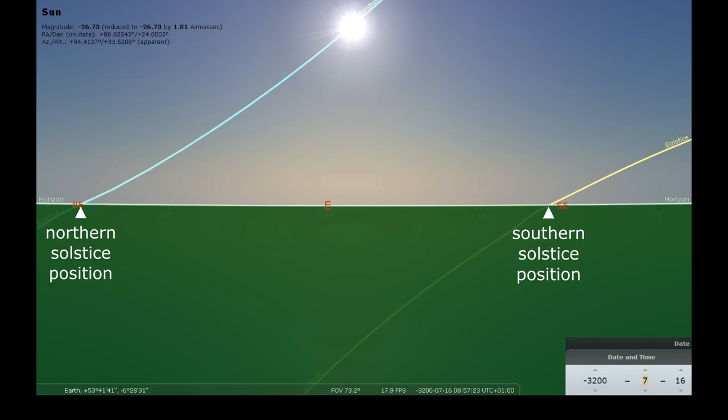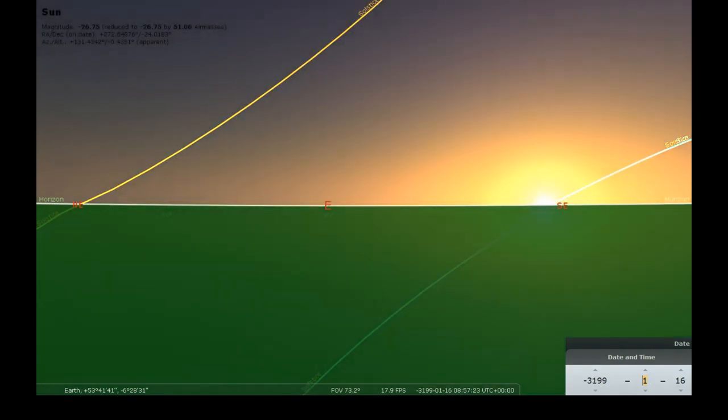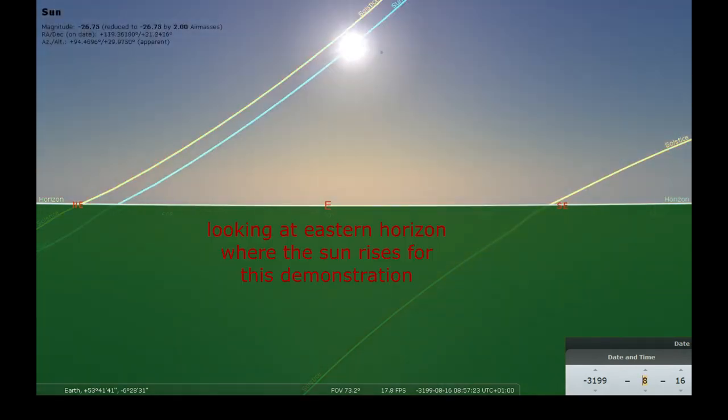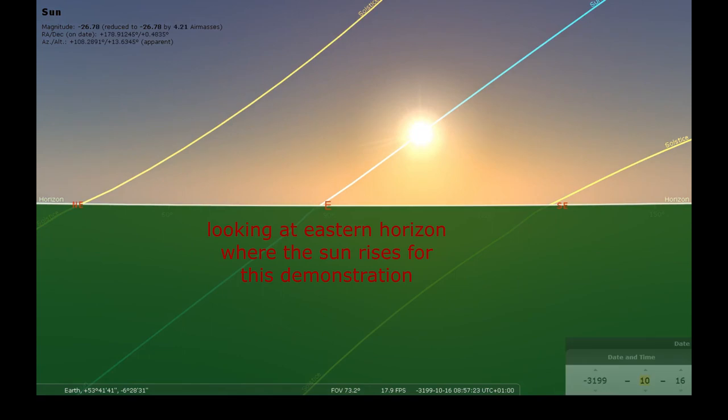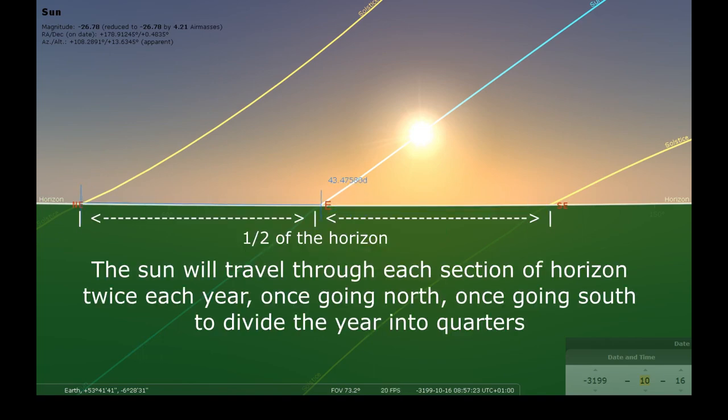The year is already divided roughly in half between the two solstices. If we divide the horizon itself between the solstice positions, either towards the east where the Sun rises, or toward the west where it sets, we will get a position that divides the halves of the year into quarters loosely related to our modern definition of equinoxes, roughly halfway between solstices.